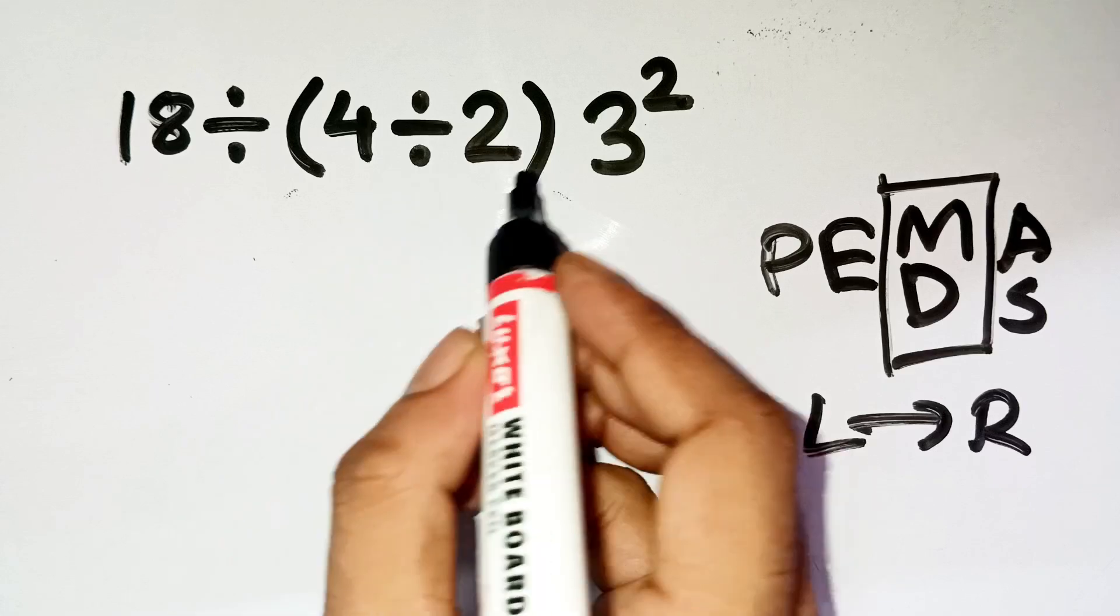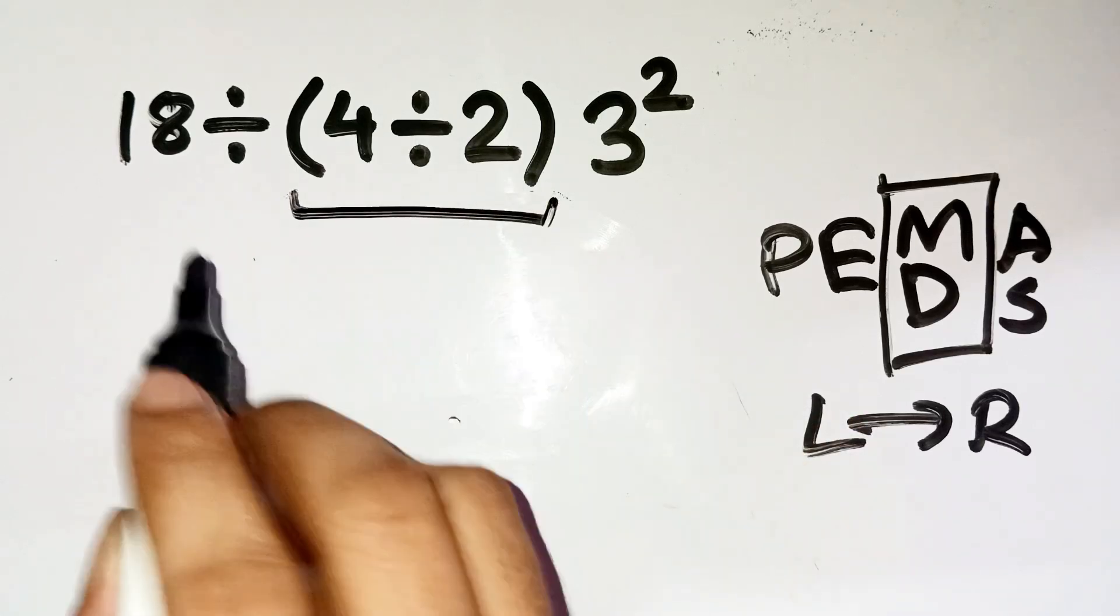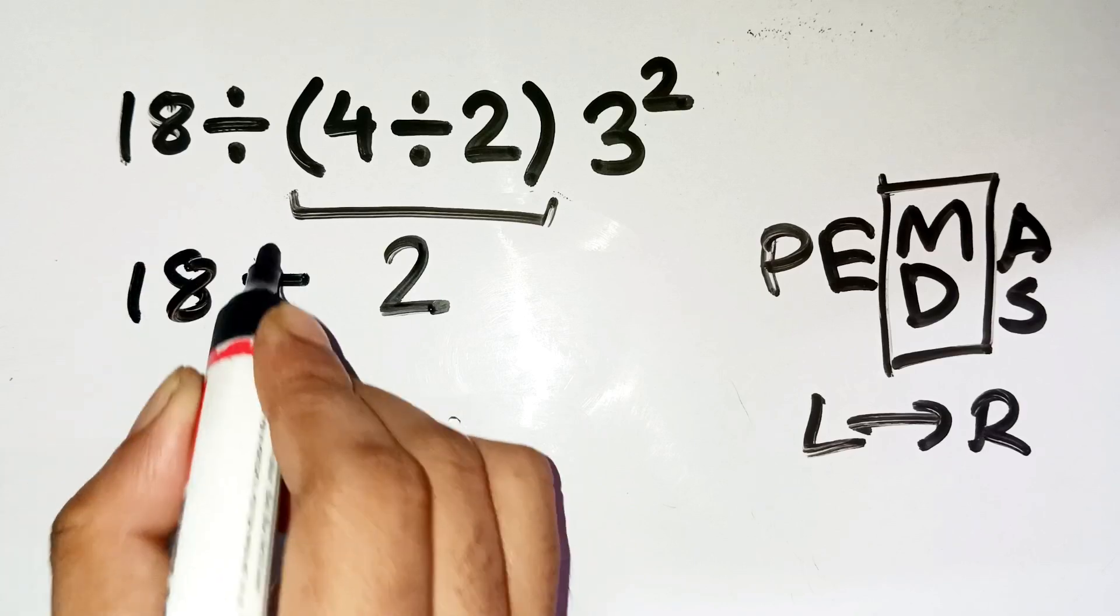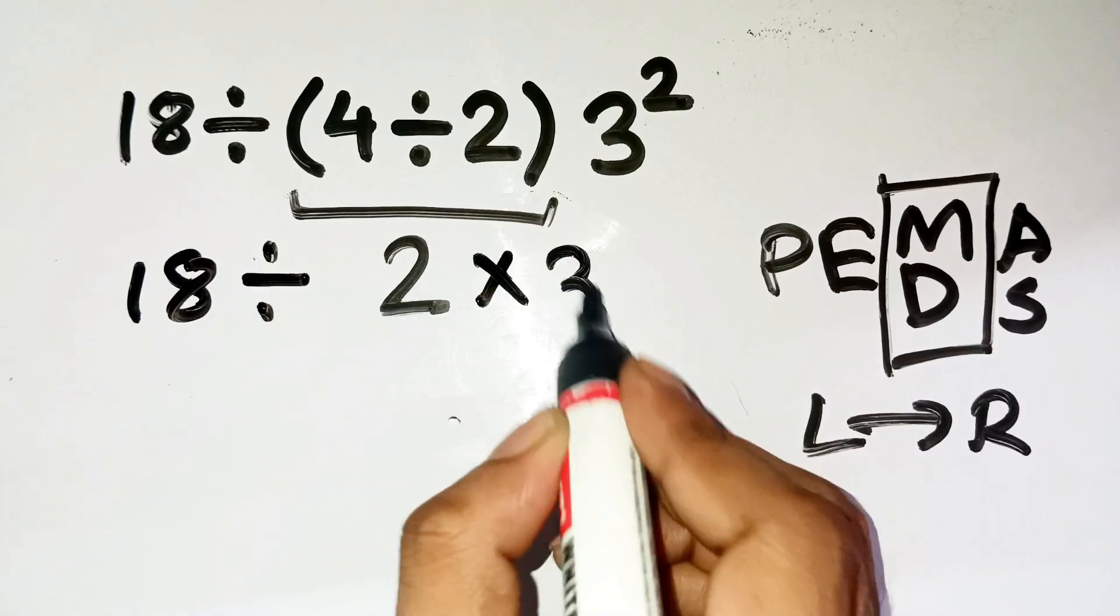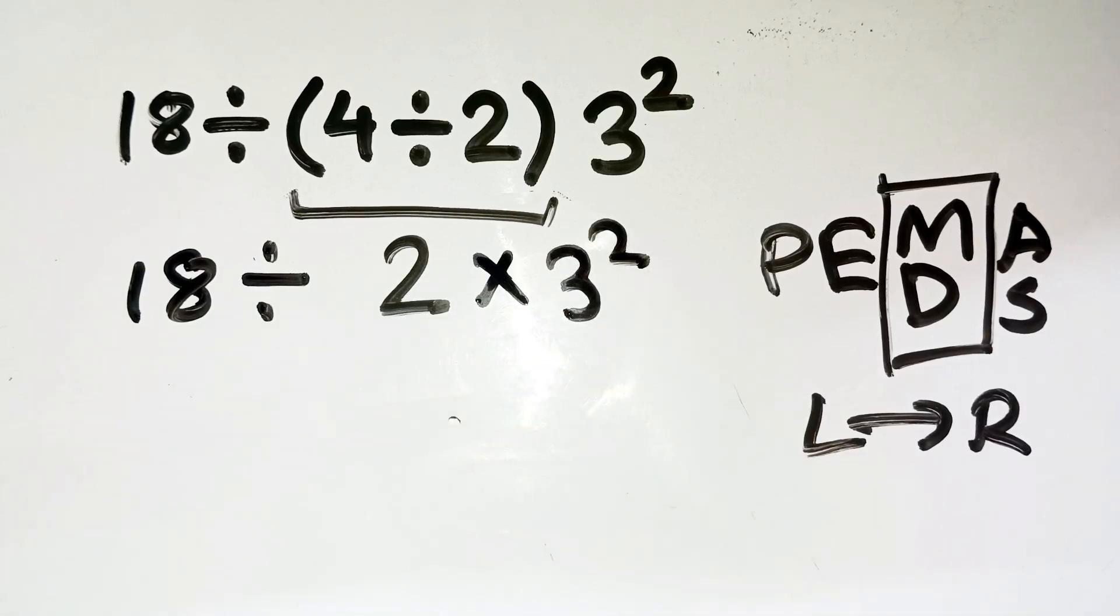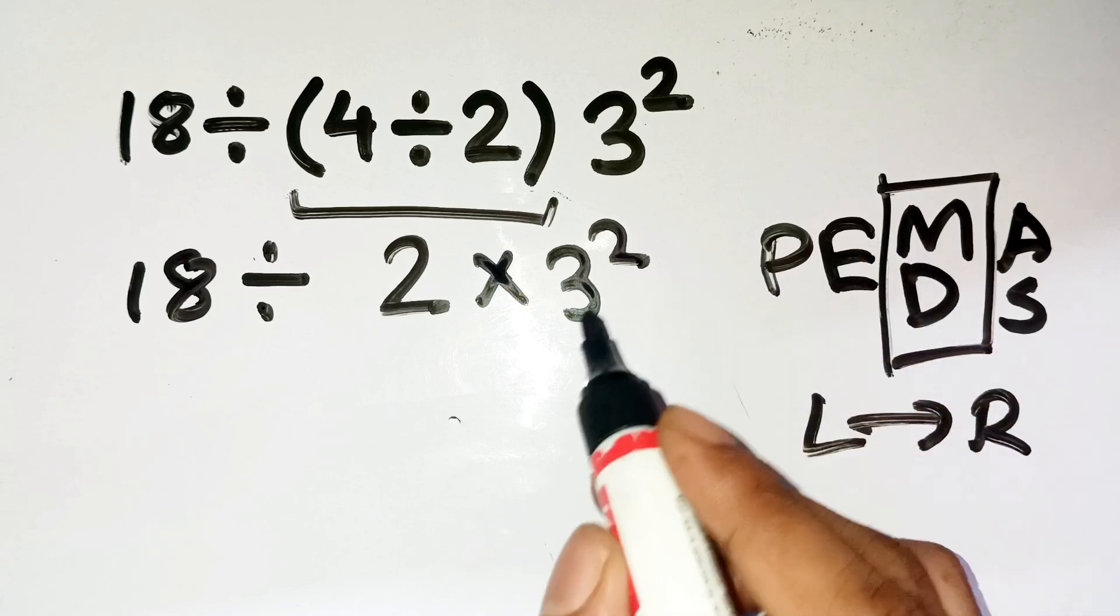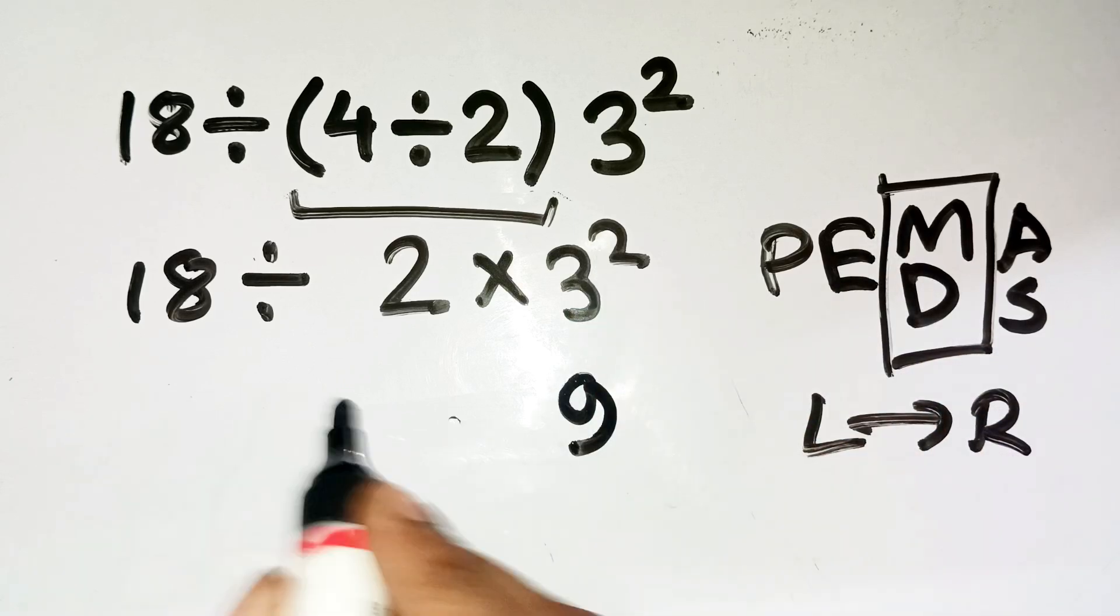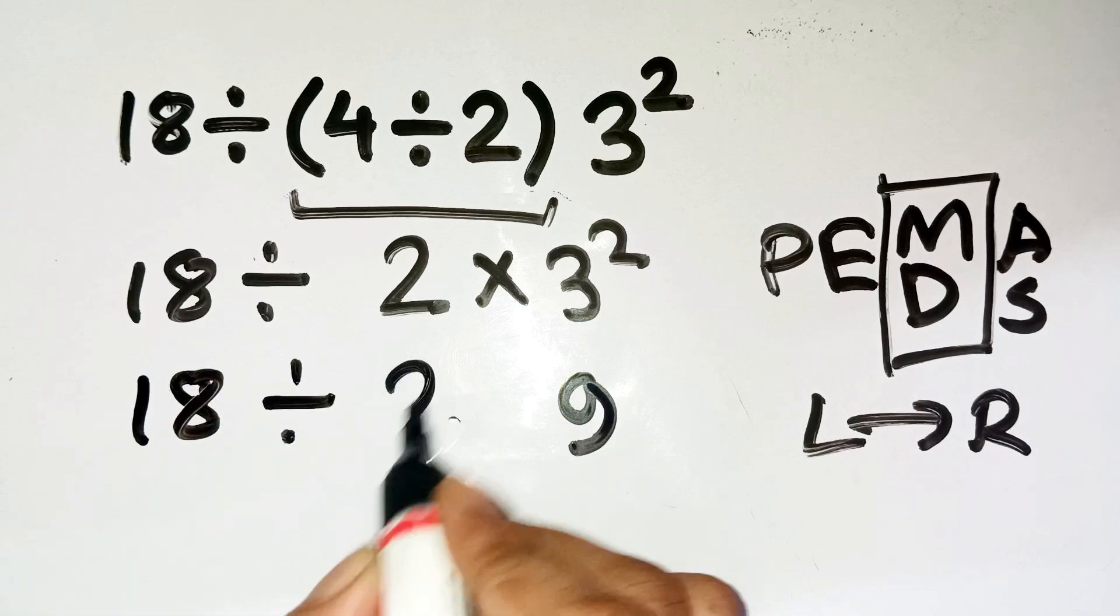Inside the parentheses, we only have 4 divided by 2, which is 2. So now, the expression becomes 18 divided by 2 times 3 squared. Next, we take care of the exponent. 3 squared means 3 times 3, which is 9. So now it looks like 18 divided by 2 times 9.